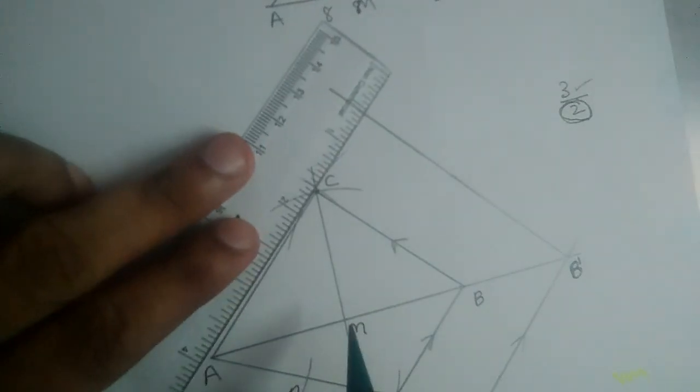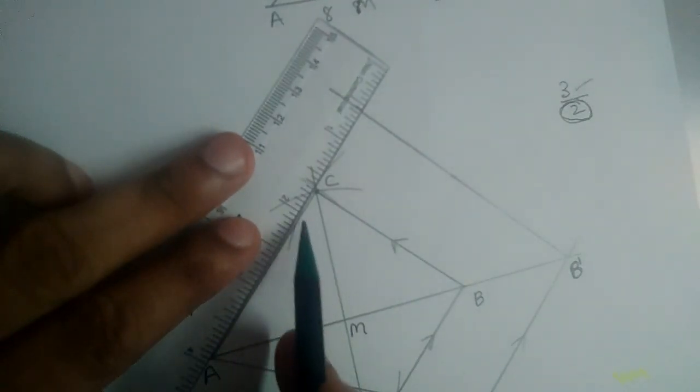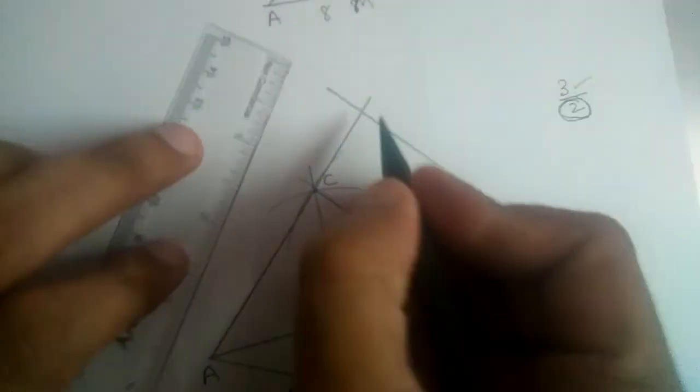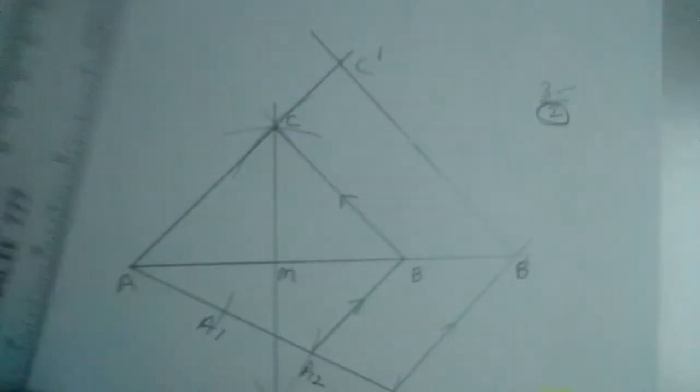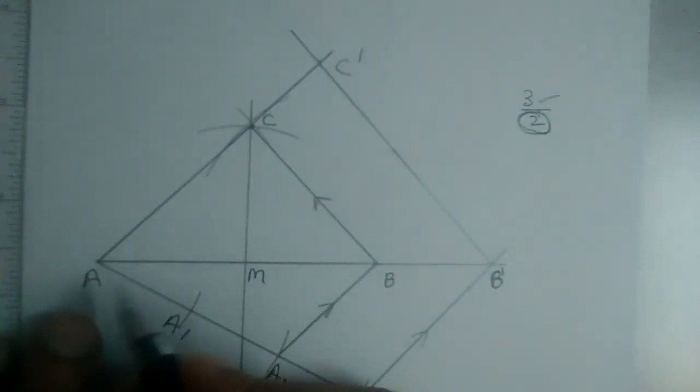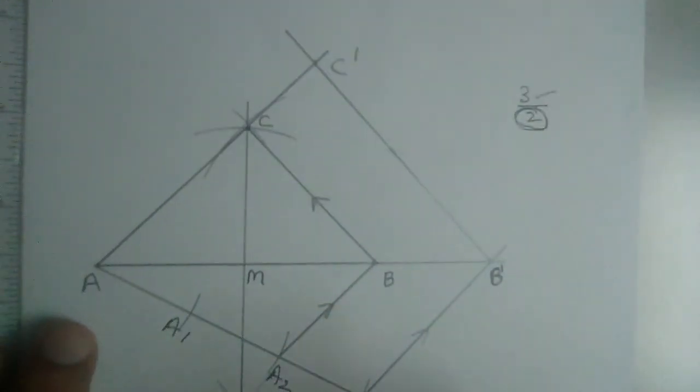And extend AC now. So this point of intersection is C dash. So AB dash C dash is our required triangle.